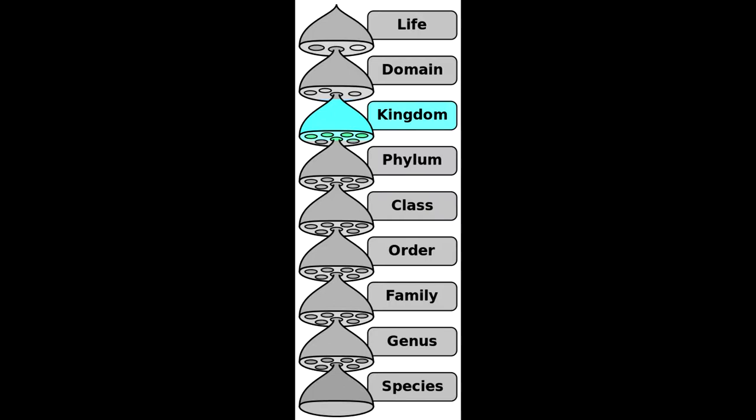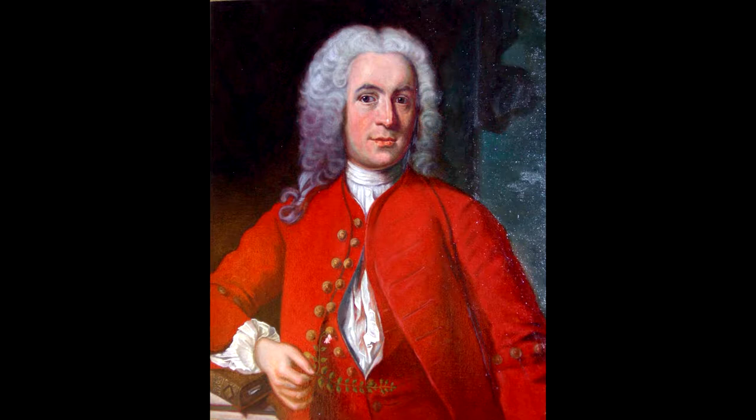In taxonomic rank, after domain is kingdom. Carl Linnaeus, considered to be the father of modern taxonomy, lived in the 18th century and contributed greatly to the understanding of animal classification.